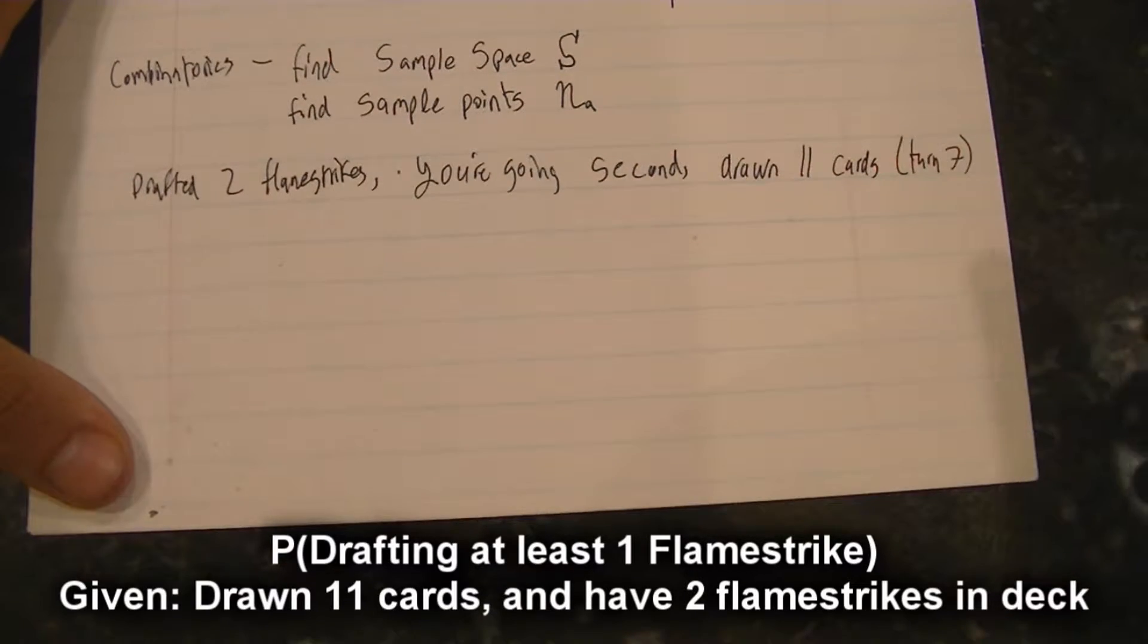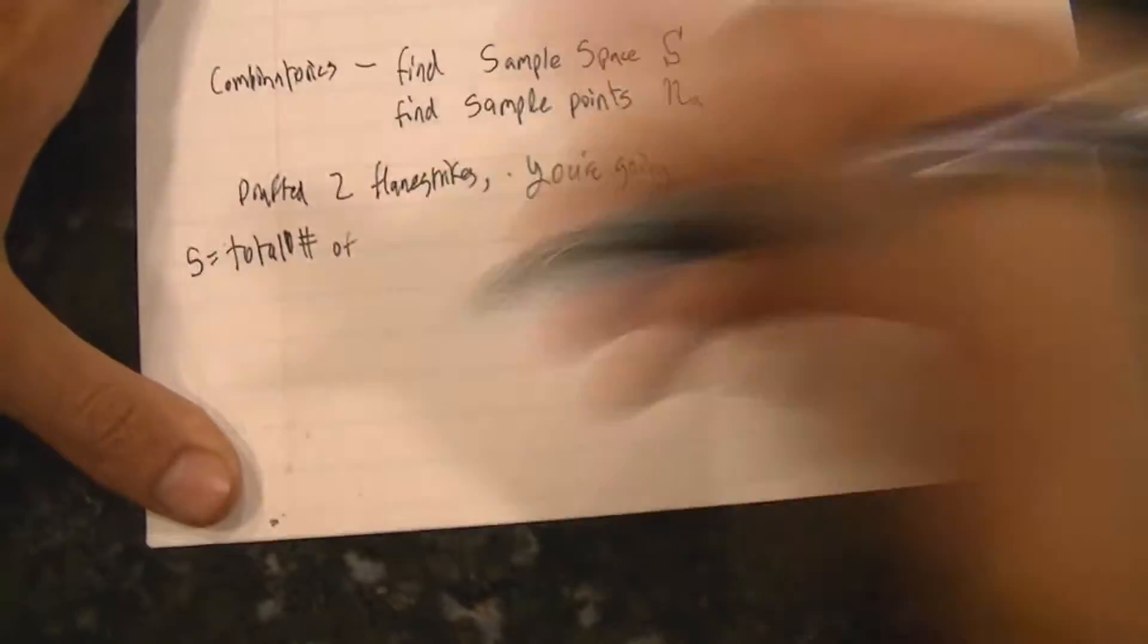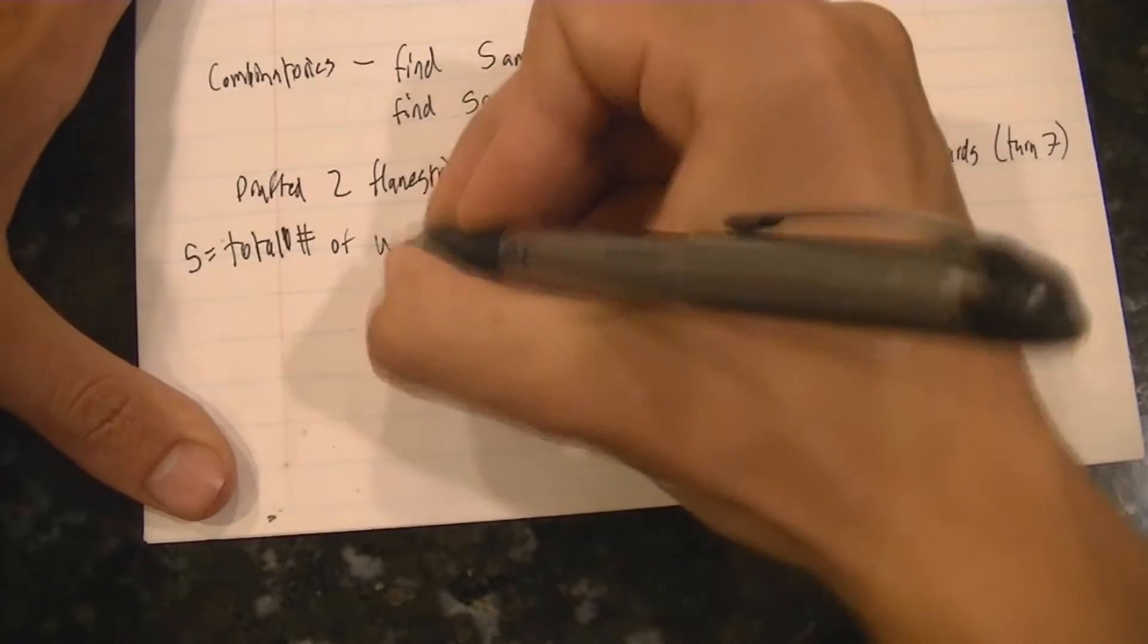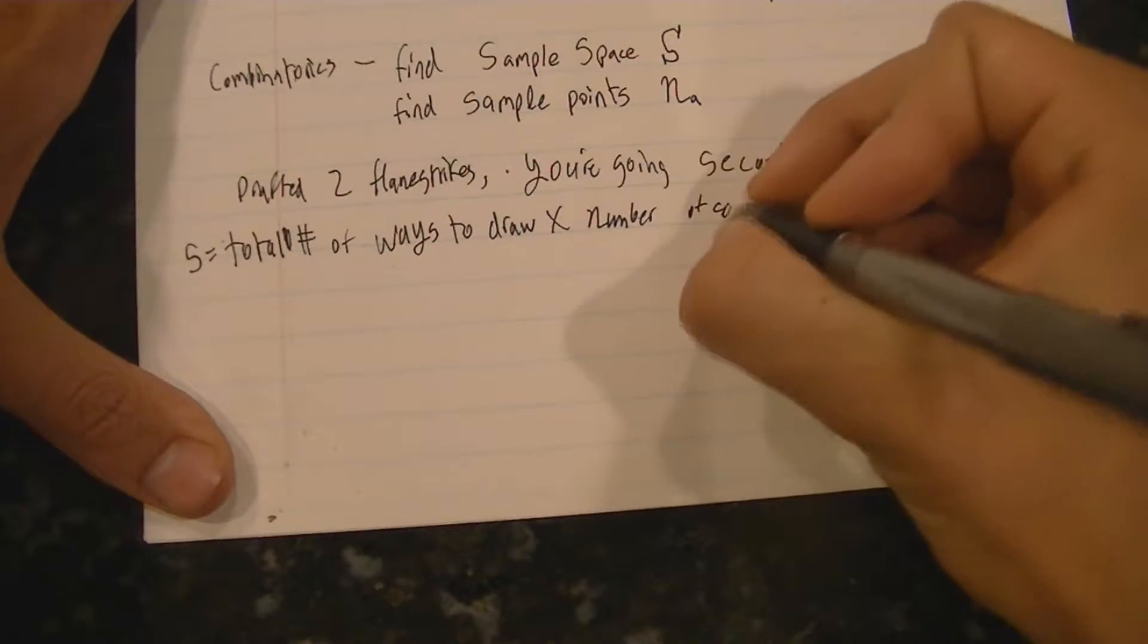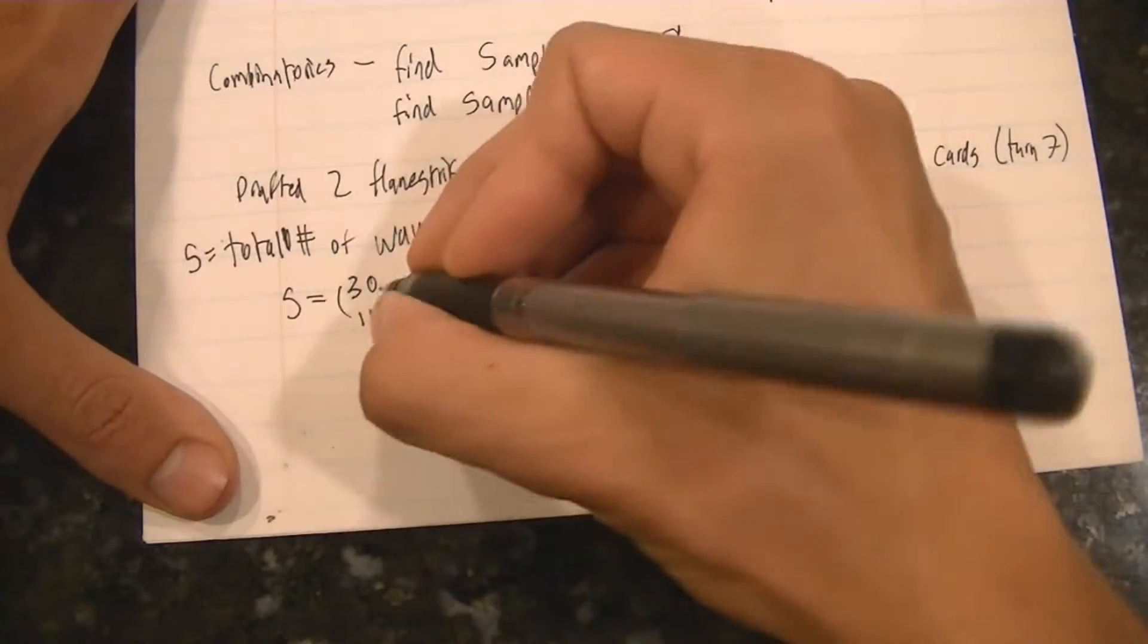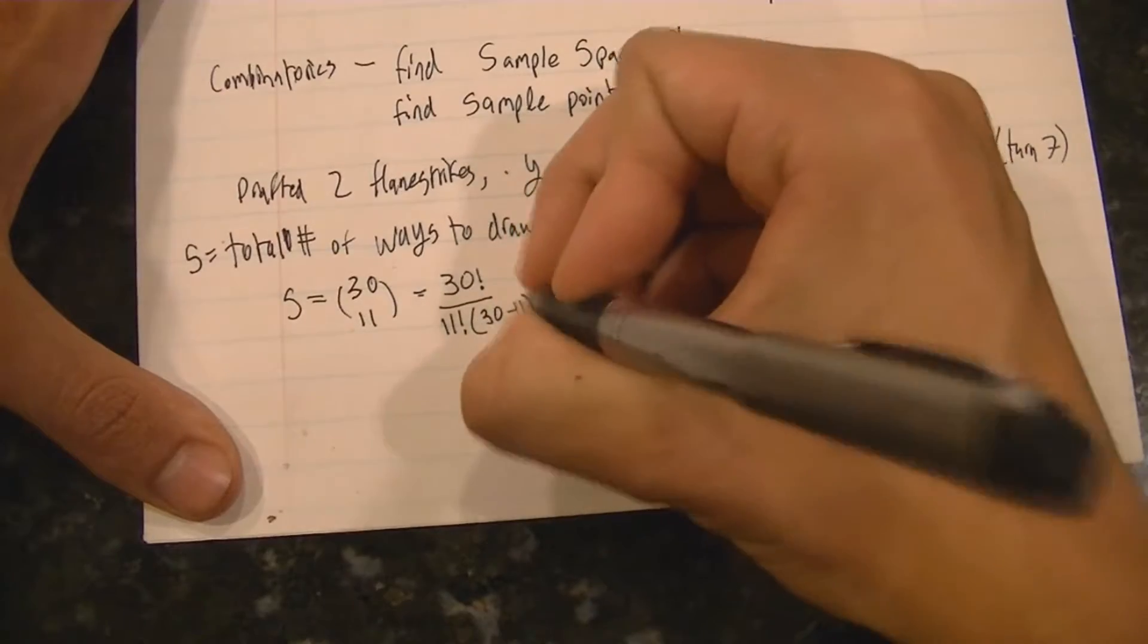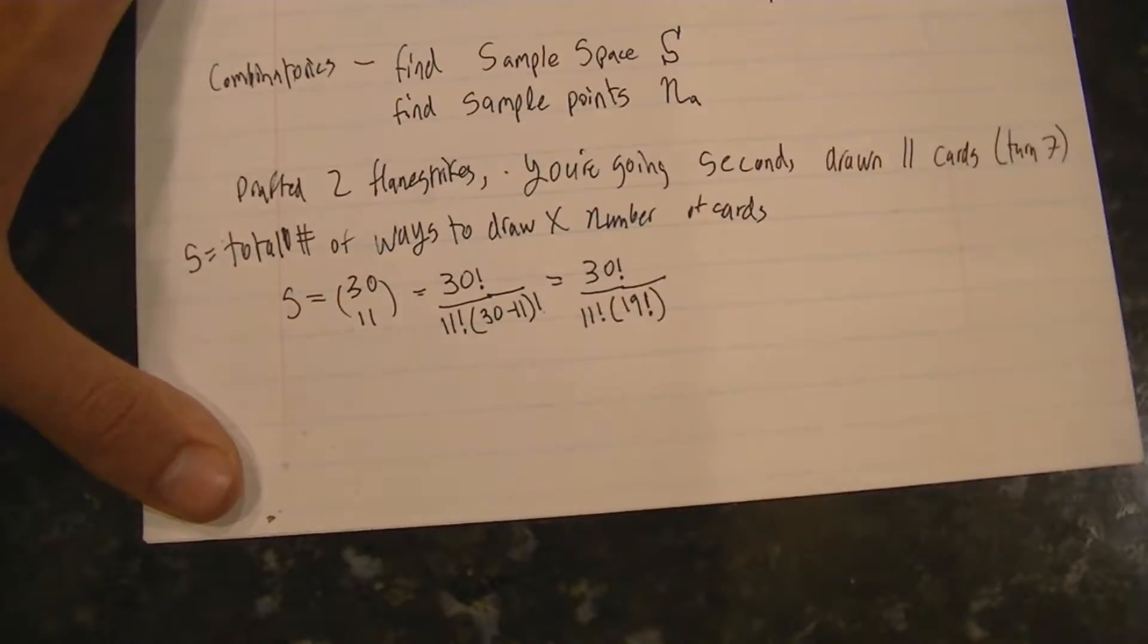First you're going to want to calculate the sample space which is the total number of ways that you can draw 11 cards out of a deck of 30 cards. So the number of ways that you can draw 11 cards from a deck of 30 is 30 choose 11 because the order that you draw the cards in does not matter. All that matters is whether or not you've drawn a flamestrike by now.